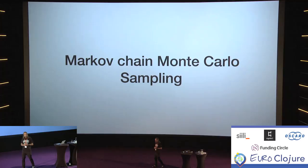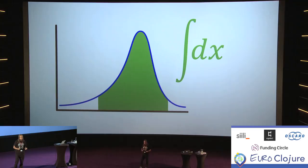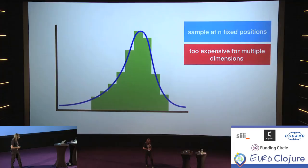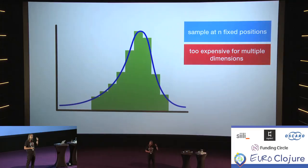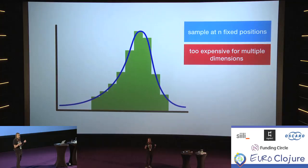An important technique needed for that is Markov chain Monte Carlo sampling. Why do we need it? To do inference, we need to calculate the integral over the marginal likelihood, but for most interesting cases there's no analytical solution, so we need approximation. A naive approach is splitting the range into an evenly spaced grid and calculating the probability for each point — you get rectangles, sum them up, and you have an approximation for the integral. However, it doesn't scale with dimensions: in 1D with 1,000 bins, going to 2D gives one million, 3D gives one billion, and so forth.